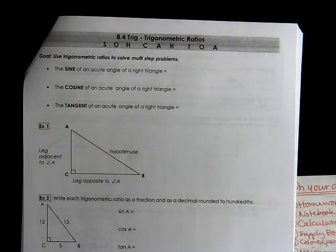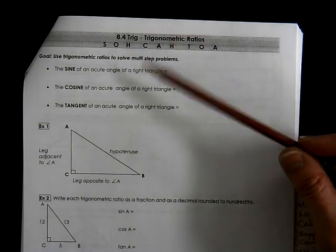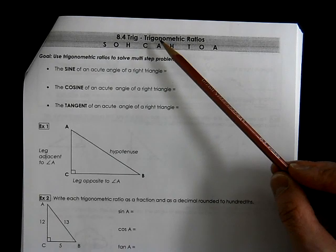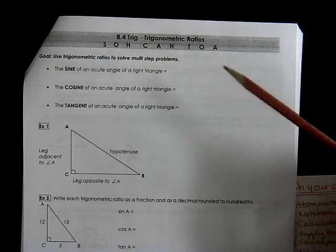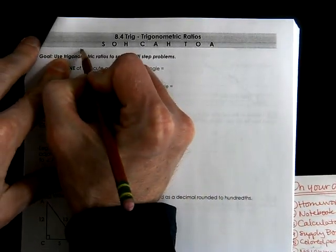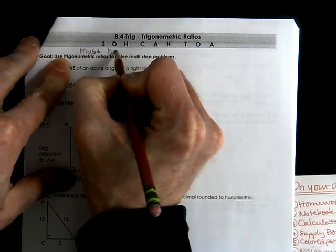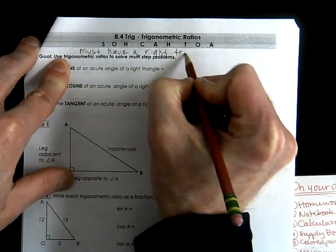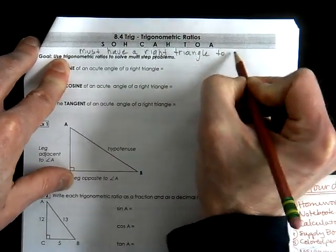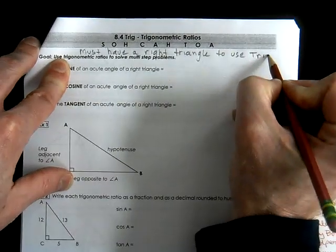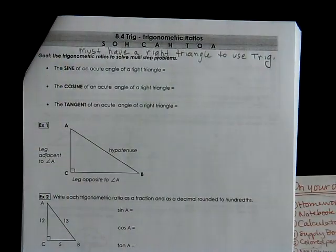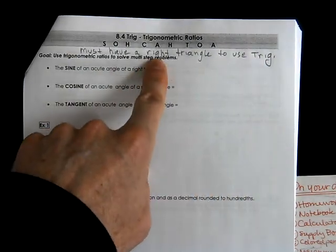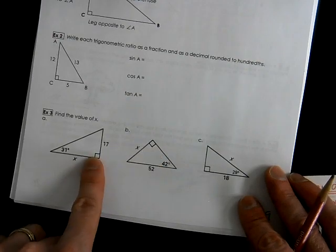This is geometry 8.4. We're talking about trigonometry. When we talk about trigonometry, one thing that's required is we have to have a right triangle. We usually abbreviate it and call it trig. To use trig, you need a right triangle — you have to have the box in the corner.